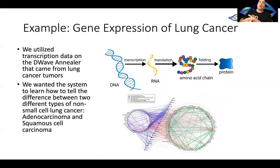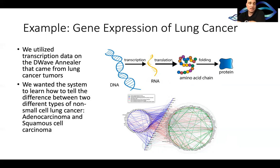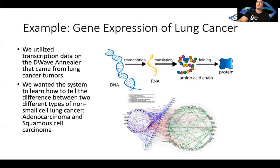I'm going to talk about something we actually did on a quantum computer. Gene expression is basically this: you have DNA and it gets transcribed to RNA and then translated into amino acid chains, which fold into a protein — a three-dimensional structure. Gene expression basically counts the genes in the DNA that end up getting turned into RNA; this is transcription, and that's what we count. We utilized transcription data from 104 lung cancer patients, two different types of non-small cell lung cancer. We wanted to get the D-Wave machine to help us build a predictive model for predicting the subtype of non-small cell lung cancer, as this will alter treatment.